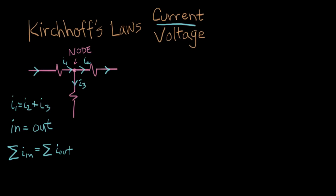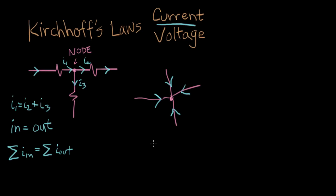Now I want to generalize this a little bit. Let's say we have a node, and we have some wires going into it — here are some wires connected up to a node, and there's current going into each one. I'm going to define all the current arrows going in. What Kirchhoff's current law says is that the sum of the currents going into that node has to be equal to zero.